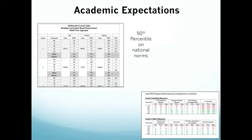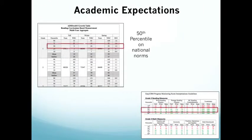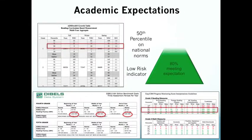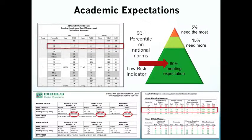Our expected guidelines within our data will come from different academic sources, such as national medians, expectations, or district-defined goals for students. Academic expectations can come from many different data sources, including curriculum-based measurements. We might want to use the 50th percentile on national norms. Sometimes we use risk indicators, wanting our students to be in a low-risk zone. If we're taking a bigger picture look at the school, we often use the ideal that we want 80% of our students to be meeting that expectation.